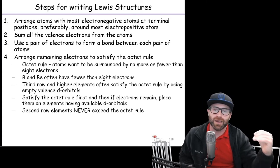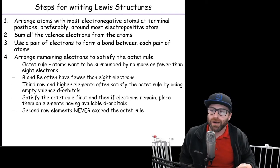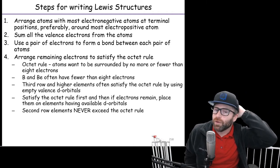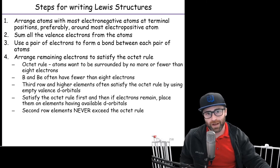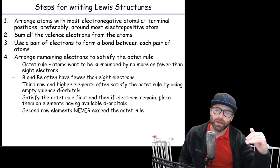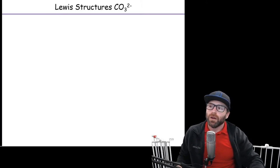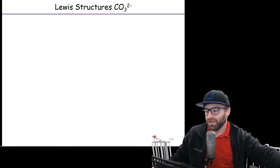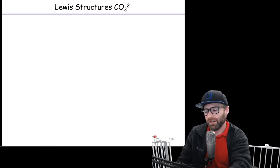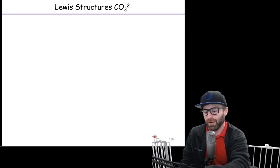The reason elements in row three or lower can have an expanded octet is because they have those D orbitals. Everybody wants at least eight, but if you have D orbitals you can hold more than that — that's what we call an expanded octet. If we run into a situation where we have extra electrons after everybody's octet is satisfied, we're going to put the extra electrons around atoms that can hold the extra electrons — namely those heavier elements. Anything in the second row is never going to exceed eight electrons — only ever going to follow the octet rule.